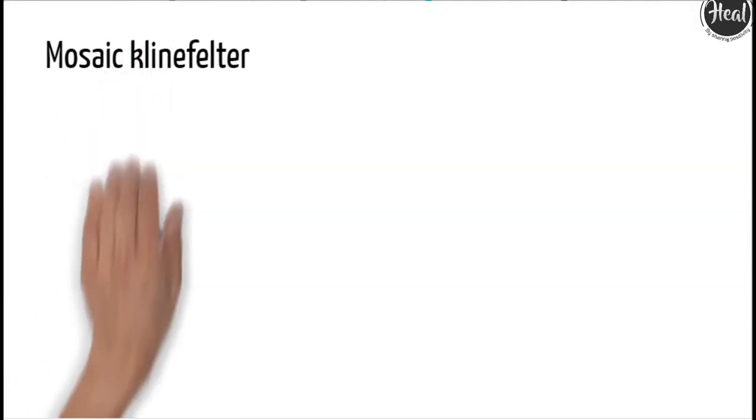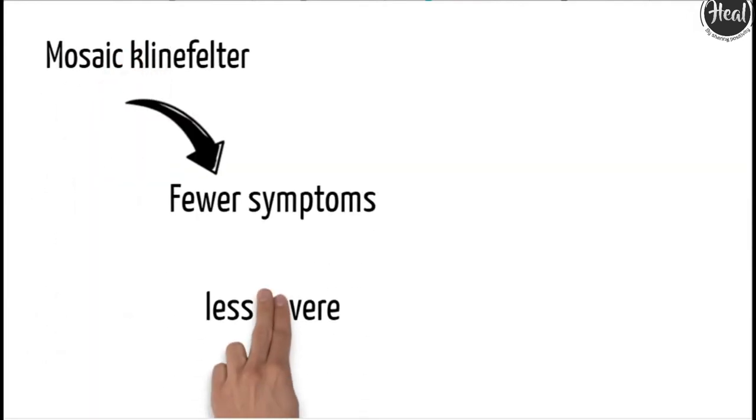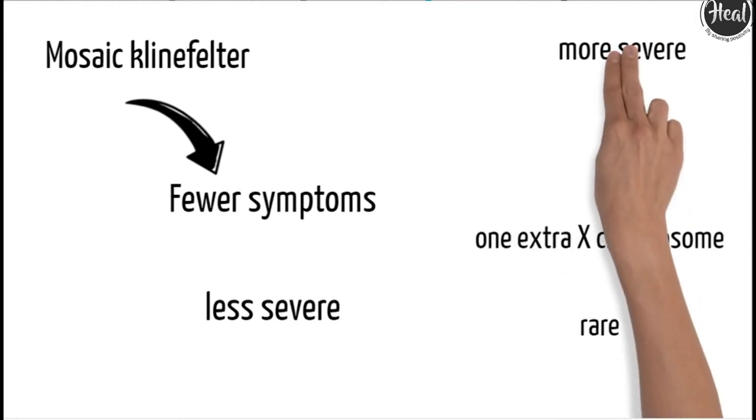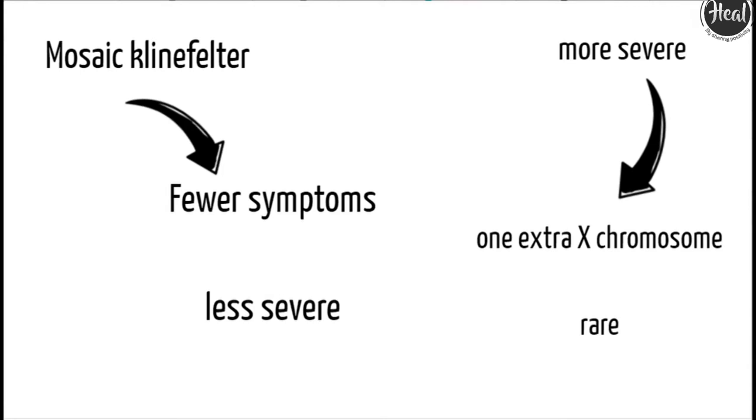An extra X chromosome in only some cells, called mosaic Klinefelter, in which you don't have as many symptoms and it is less severe. If there are more than one extra X chromosome, which is very rare and more severe.